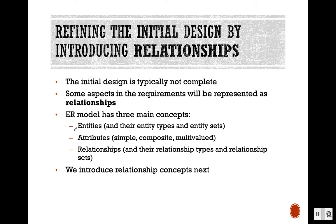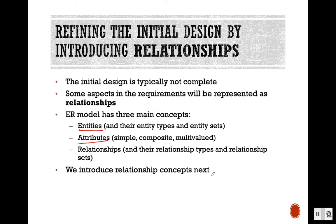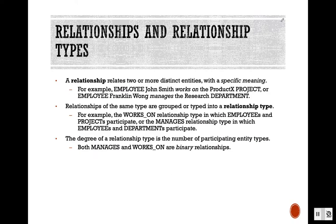So far we saw all the entities and their attributes — simple, composite, and multi-valued. Now we are going to see the relationship concept. A relationship relates two or more distinct entities. It can relate more than two entities, but in all the examples we will see, the relationship is going to relate two entities, though it can relate more than two also.